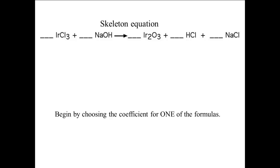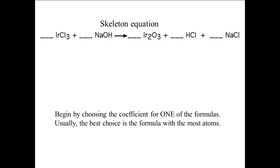Begin by choosing the coefficient for one of the formulas — we get to choose the coefficient of only one substance in the reaction. After that, we must figure out what the other coefficients would be. So the question is: which of the five substances in this reaction should we choose? Usually, the best choice is the formula with the most atoms. This is not always true, and if it doesn't work out, we can start over and choose a different substance. In this case, that formula is IR2O3.